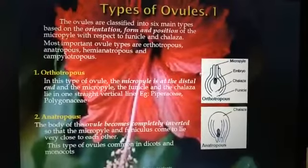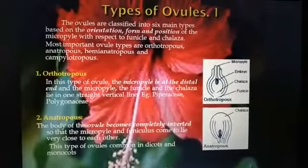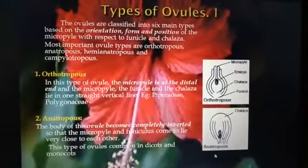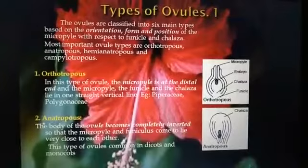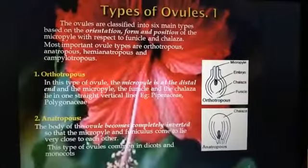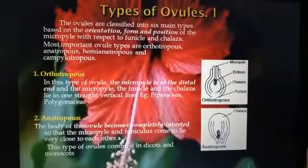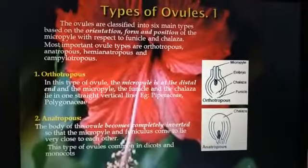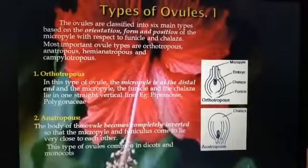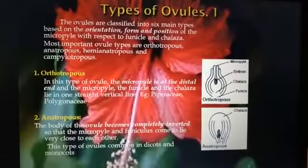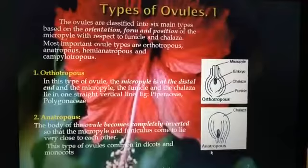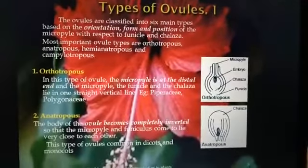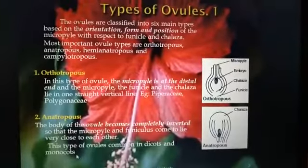The second type is the anatropous ovule. When 180-degree rotation takes place, it forms an inverted ovule relative to the orthotropous type, which is called the anatropous ovule. The body of the ovule becomes completely inverted, so the micropyle and funiculus come closer together. This type of ovule is common in dicots and monocots.